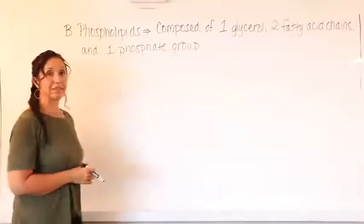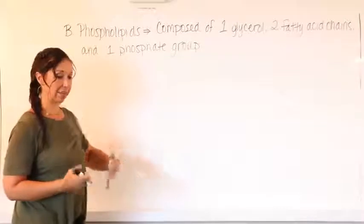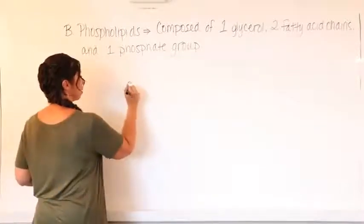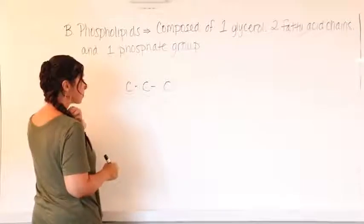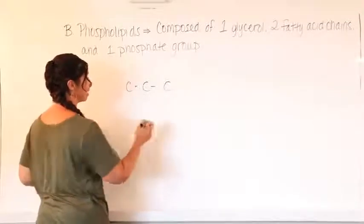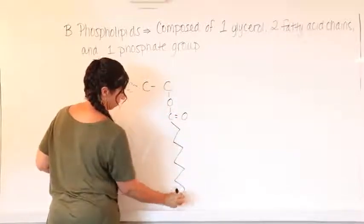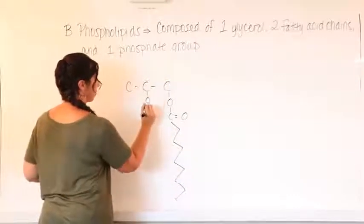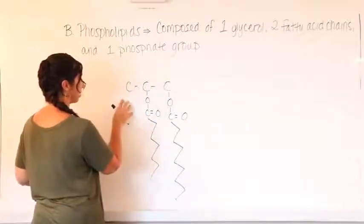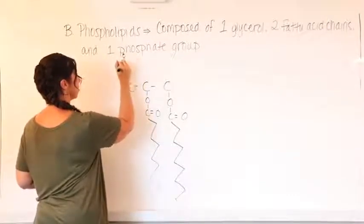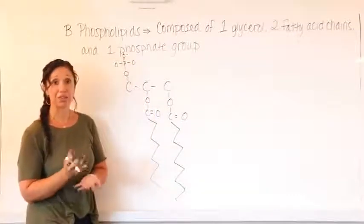I'm going to draw a phospholipid for you, but instead of drawing it sideways like I did for the triglyceride, I'm going to draw it up and down instead, because it'll make sense when we start learning about it. The glycerol, if you remember, is a three-carbon chain with hydroxyls coming off every single one of them. We had our ester linkage with our fatty acid chains going down, then another ester linkage with another fatty acid chain. And instead of having an ester linkage at the top, we are going to have our phosphate group attached there. So it looks very different compared to what a triglyceride would look like, but this is what a phospholipid looks like.